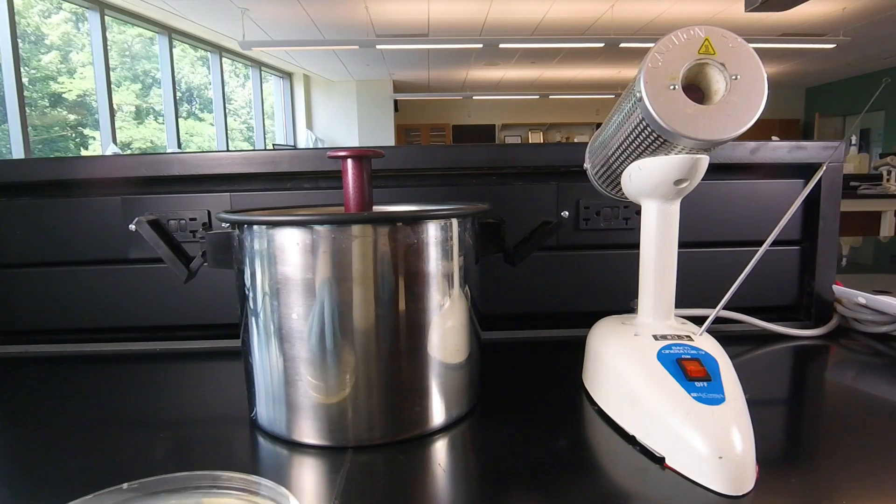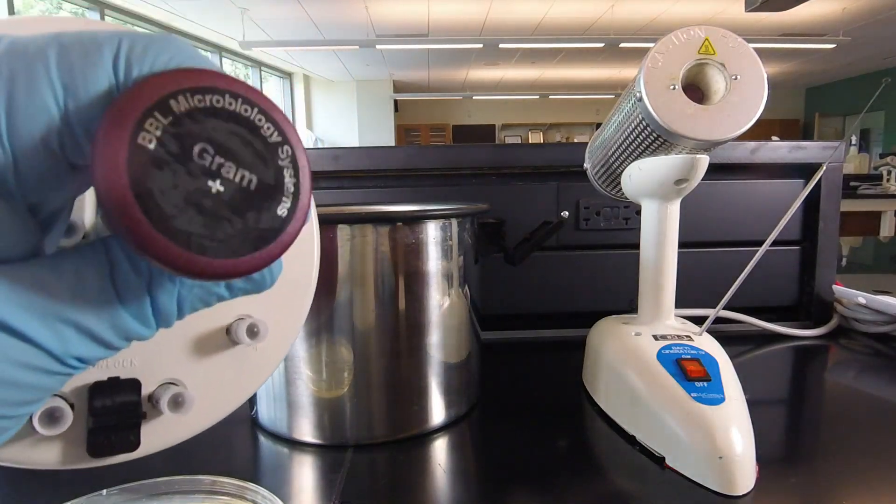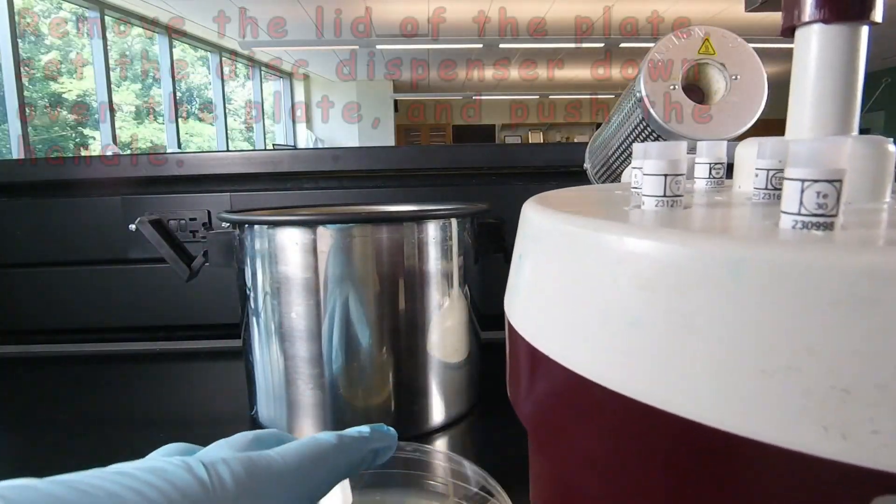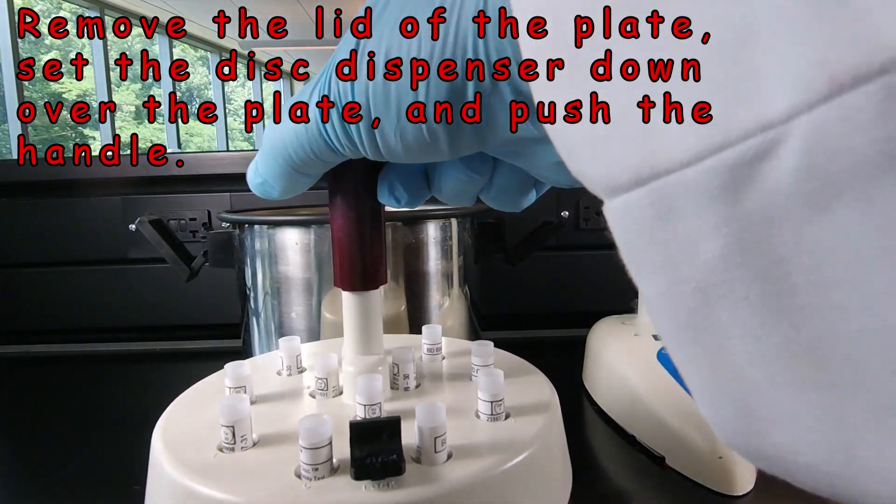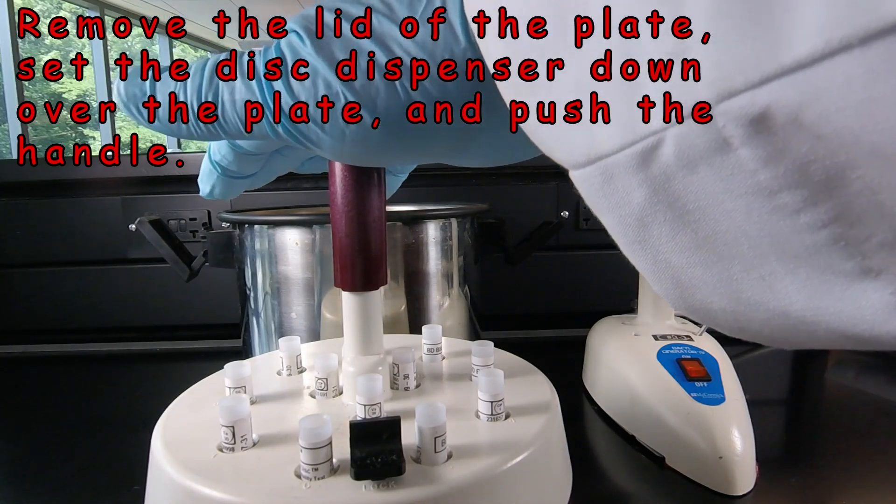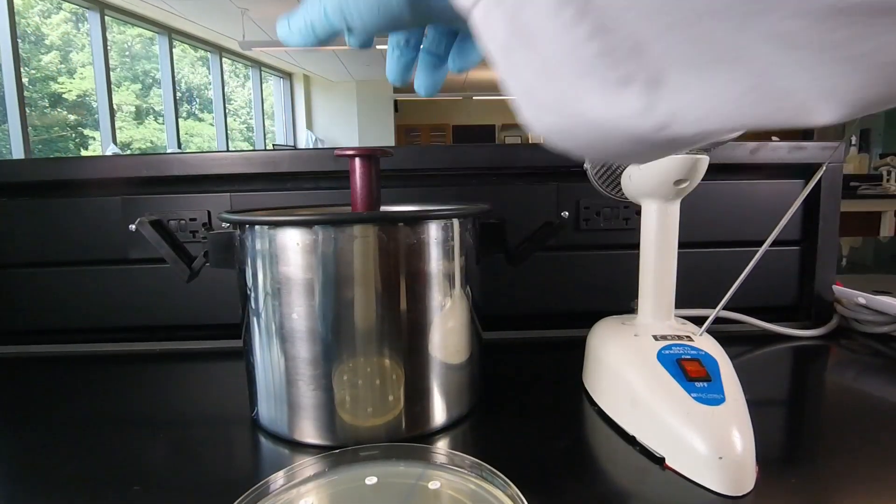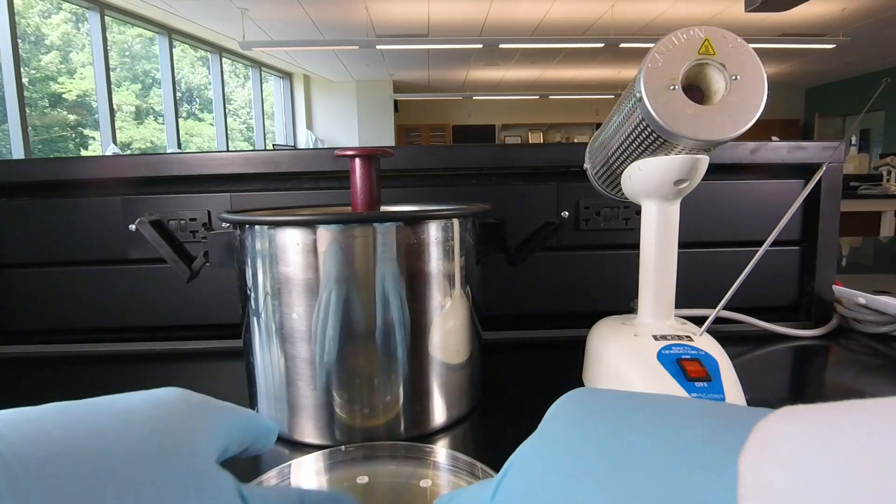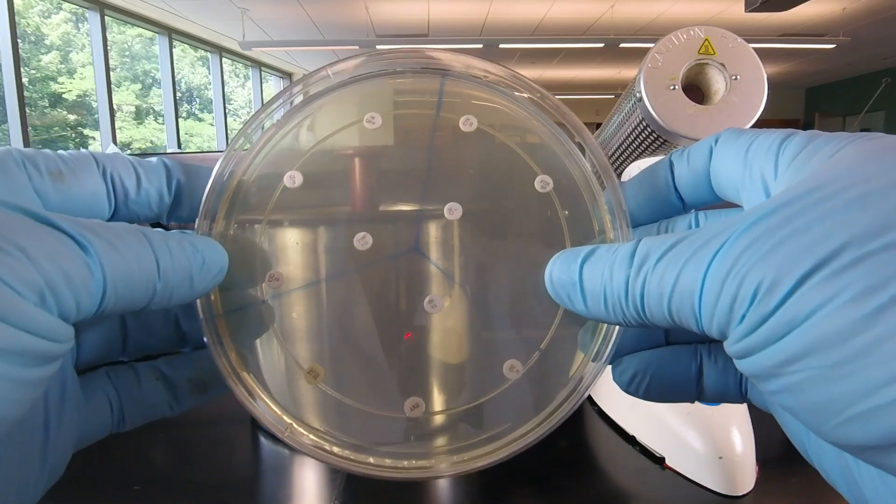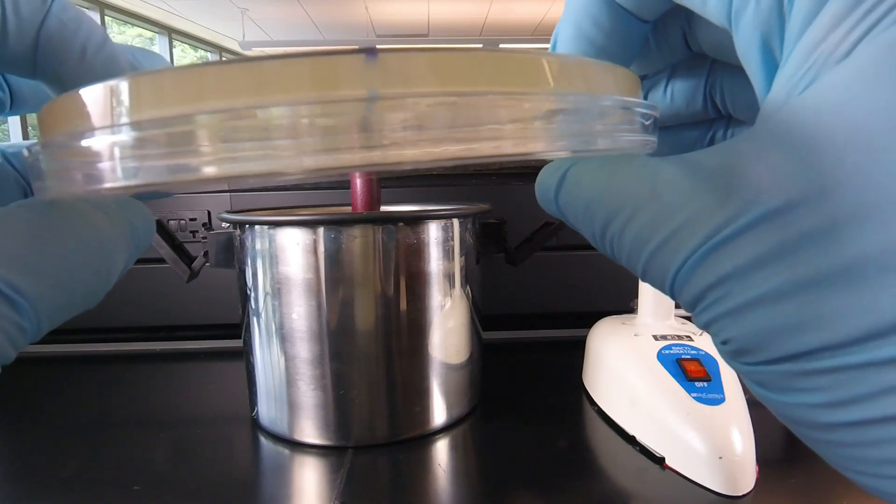Very simple to put on the antibiotic disc. We remove the disc dispenser. It also says gram-positive on the handle. And we're going to take the lid off of the plate. Put the antibiotic disc dispenser down over the plate and push down firmly on the handle. And as you see, that dispenses the 12 antibiotic discs. And it also tamps them so they won't fall off when we turn the plate upside down and incubate at 37 degrees Celsius.